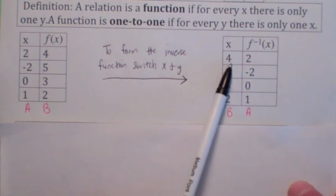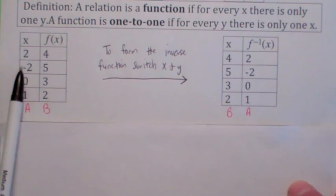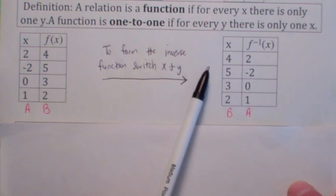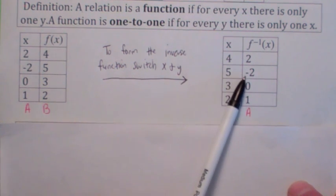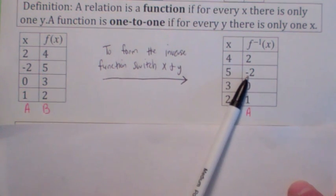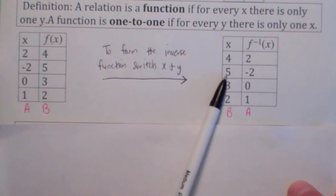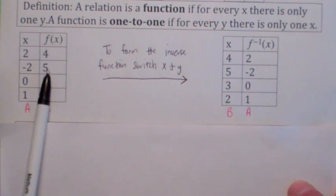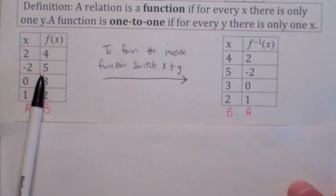If f of negative 2 is 5, we switch it and we say f inverse of 5 is negative 2. So what is f inverse of 5? f inverse of 5 is the value of x for which y is 5.